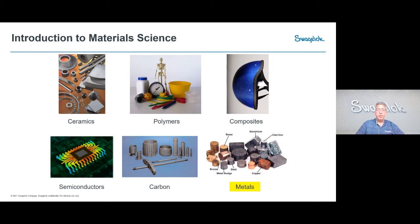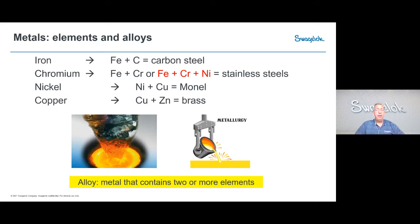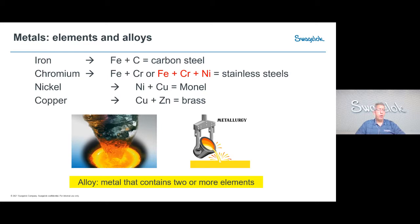Let me give you some terms related to materials. The first is the definition of an alloy. An alloy is a mixture of one or more metals or elements selected based on their overall interaction with the host material to make them stronger or more corrosion resistant, or a combination of both, along with other desired physical and mechanical properties.